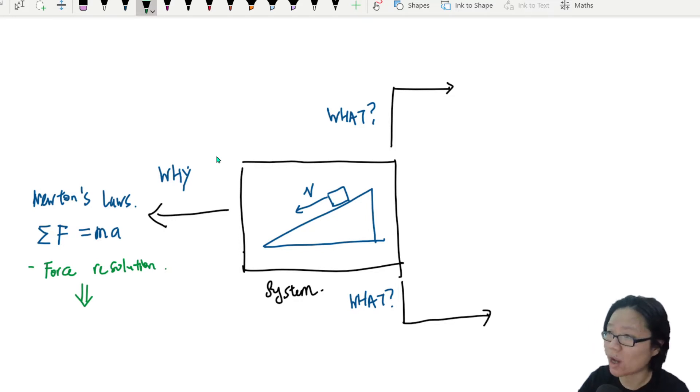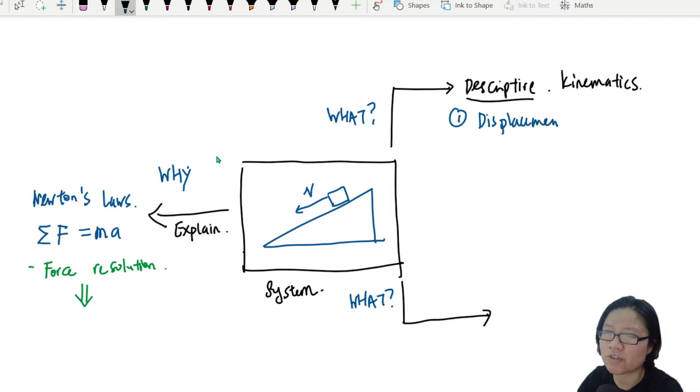And the what here is kinematics. We need to be able to describe. So this kind of what is descriptive. When you think about why, it is to explain why the block slides down. So when it comes to descriptive, the first kind of descriptive pattern that we can think about is kinematics. We will use terms like, so if you're thinking along the lines of displacement, yes.